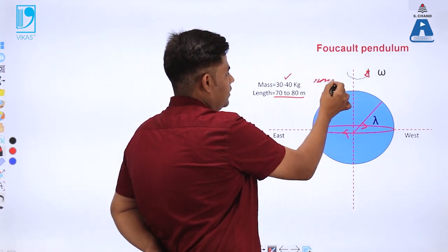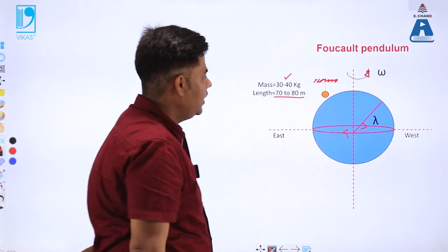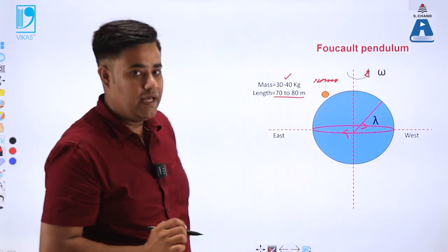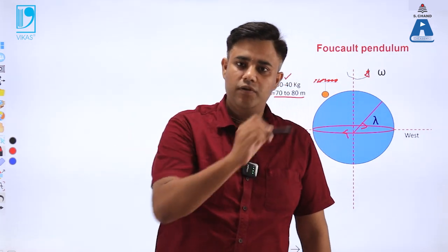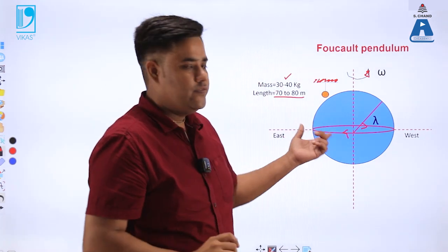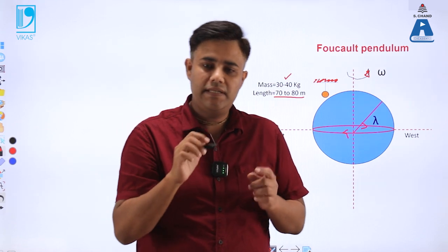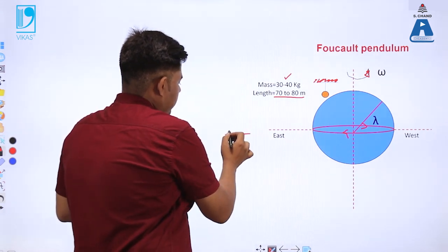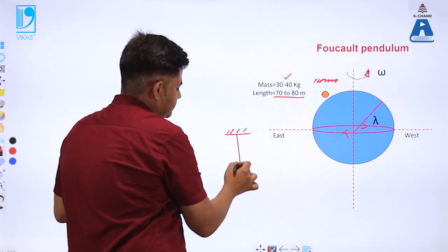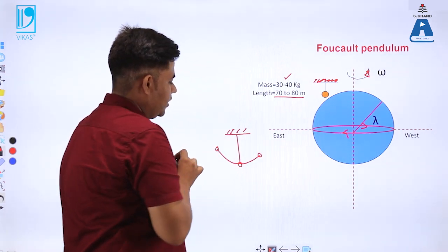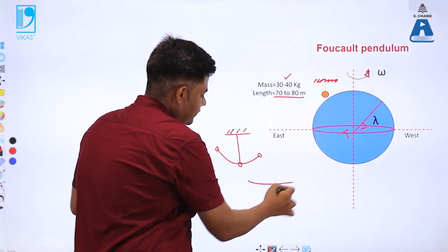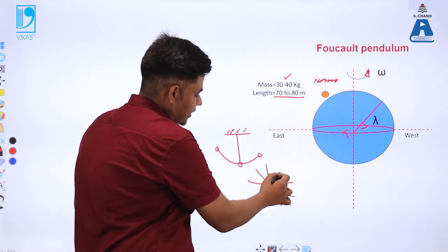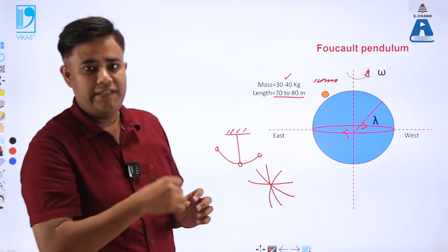Let's say this Foucault's pendulum is placed on the North Pole of the Earth. What happens when we place this pendulum on the surface of the North Pole? The pendulum keeps on moving because of its natural frequency, and simultaneously it deflects its path — it would be rotating like this, then like this, then like this, continuously changing its path.